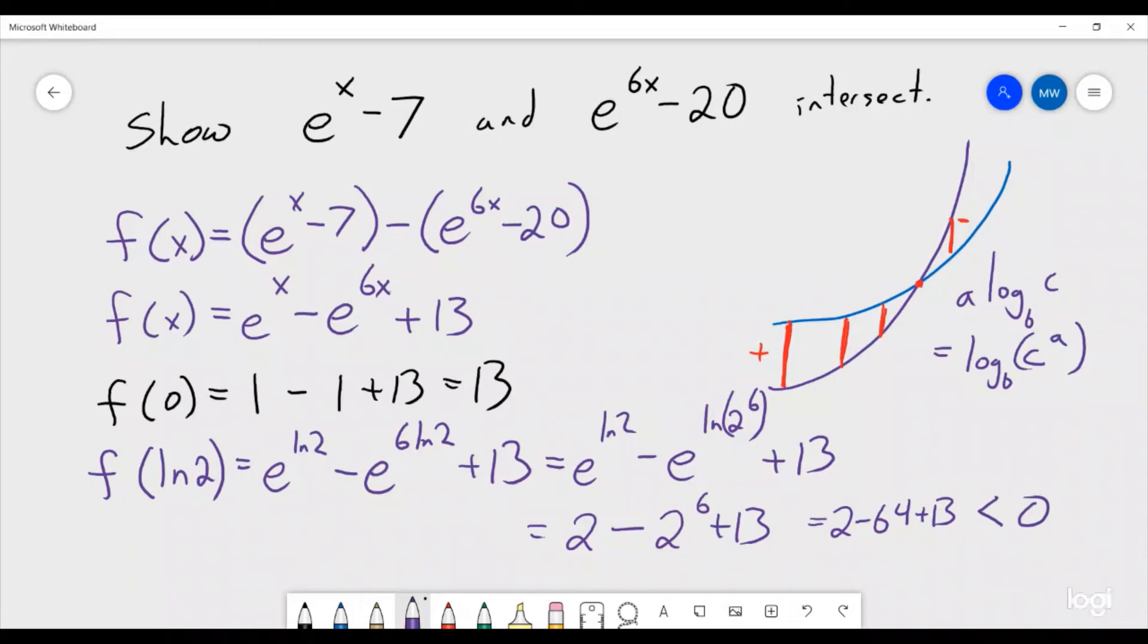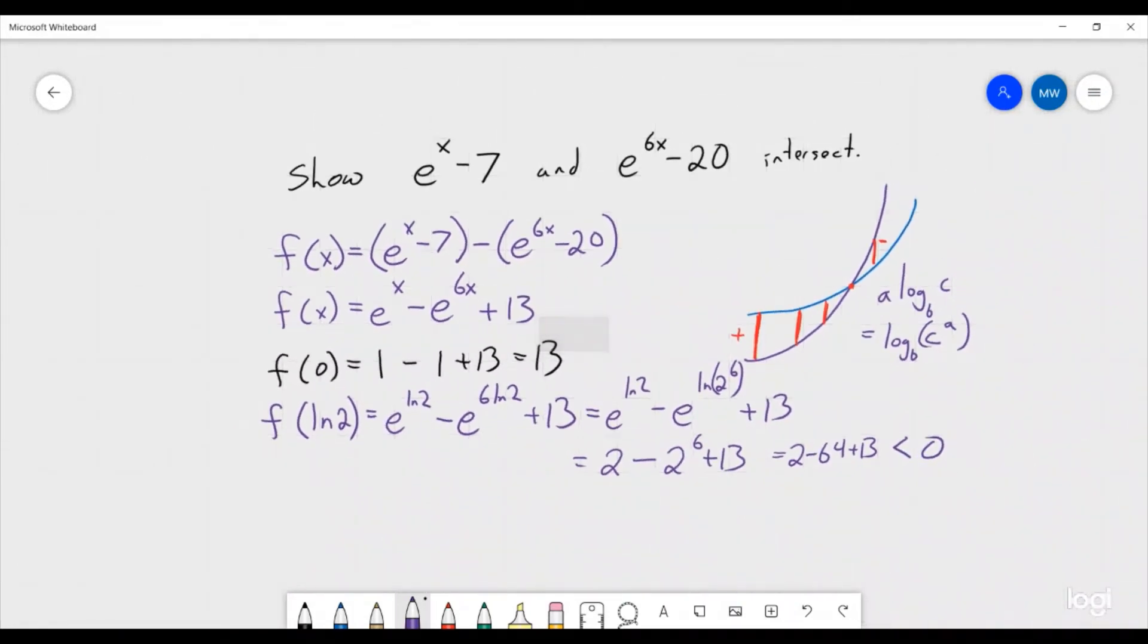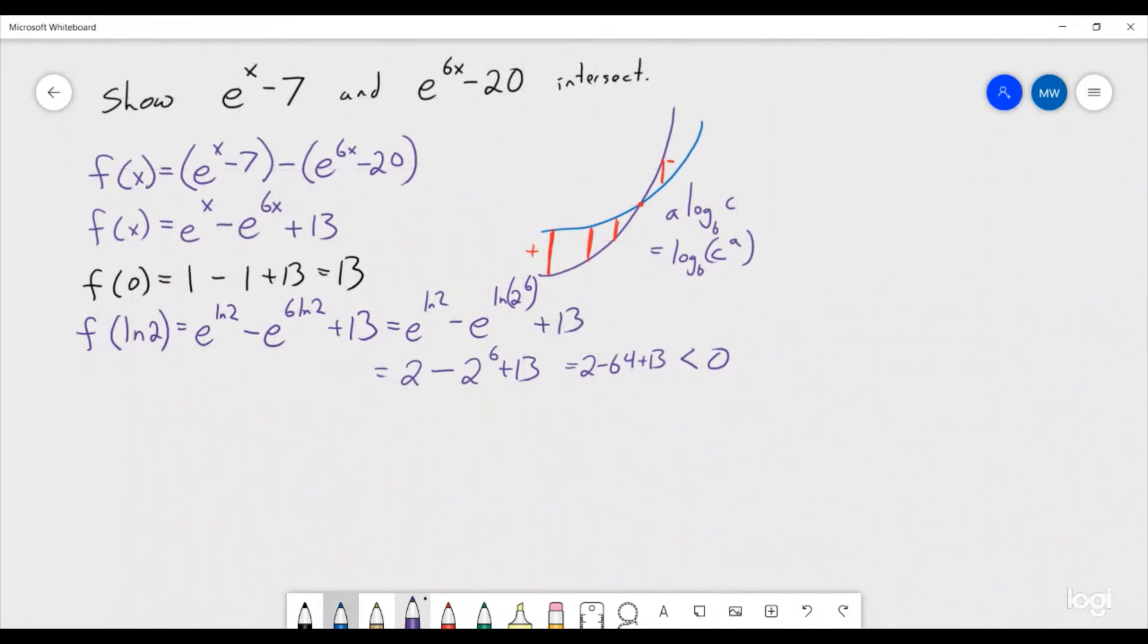So what we have is we have successfully shown that f(0) is greater than 0, and f(ln 2) is less than 0.